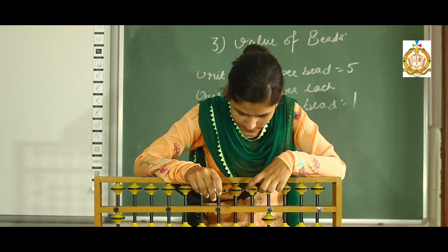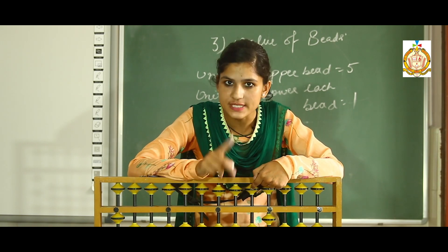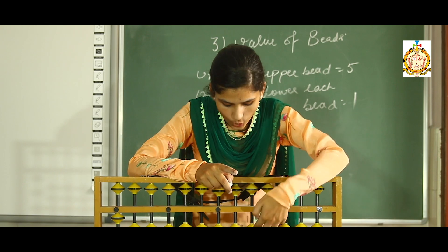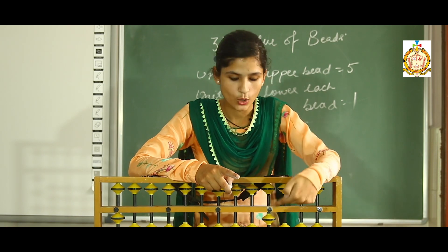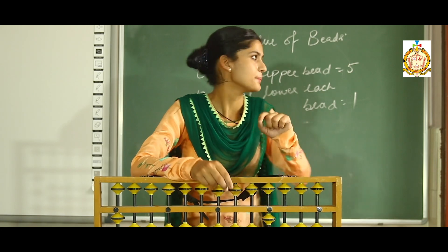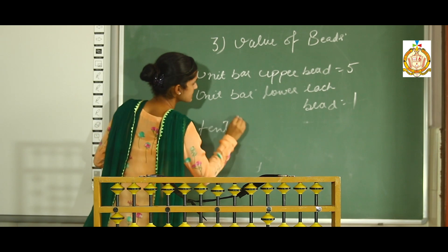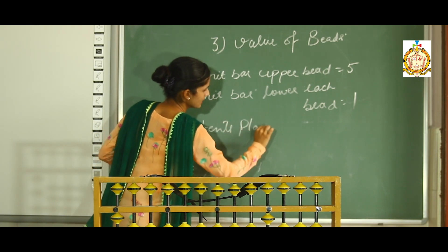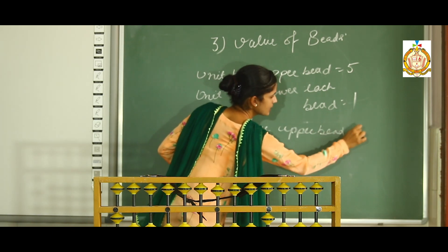After the unit place, the tens place comes. The tens place upper bead value is 50, and each tens place lower bead value is 10. So to keep in mind: unit place — upper bead 5, lower bead 1. Tens place — upper bead 50, lower bead 10.